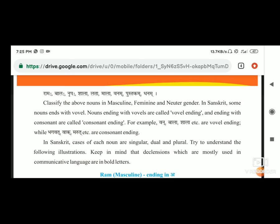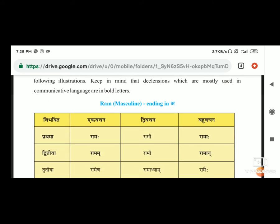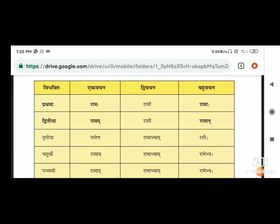Introduction of cases में - in Sanskrit, cases of each noun are singular, dual, plural. Ram जो कि masculine noun है और जो ending होता है 'अ' के साथ, यानि कि यह vowel ending word है. अब पहले जो table है वो है vibhakti का यानि कि case का, फिर है एक वचन यानि कि singular, द्वी वचन यानि कि dual, और बहु वचन यानि कि plural.